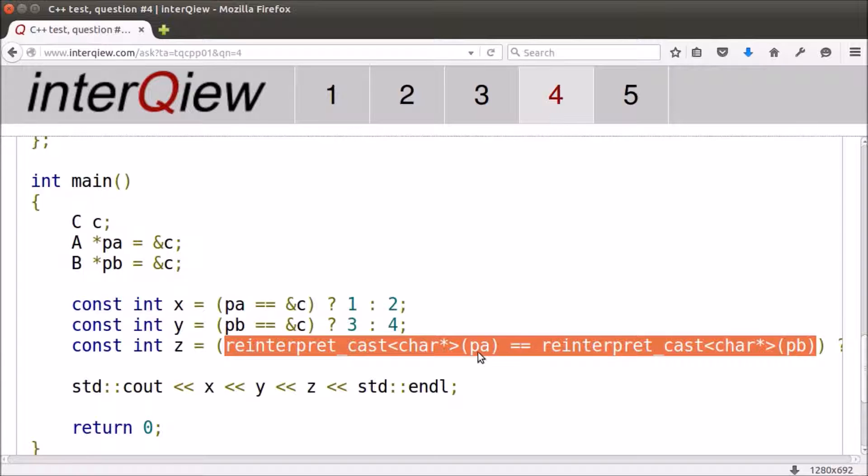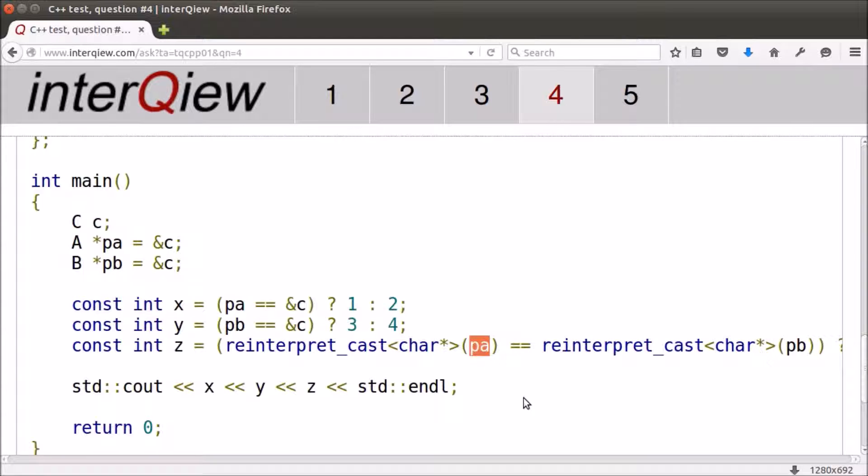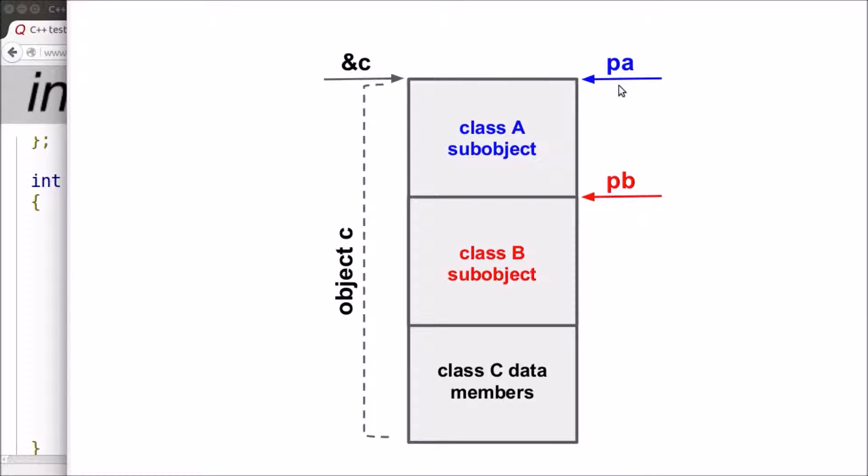The left side pointer contains the address of the sub-object of Class A, and the right side pointer contains the address of the sub-object of Class B. As we saw in the picture, the addresses of these two sub-objects are different, so the resulted pointers are not equal.